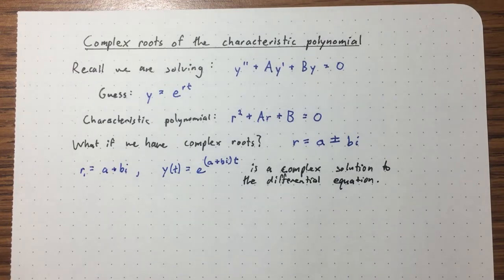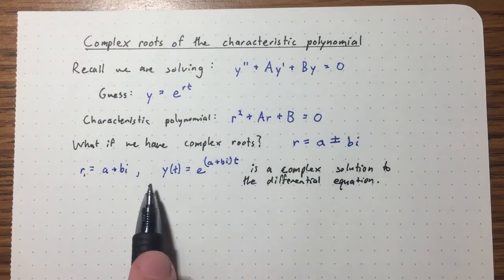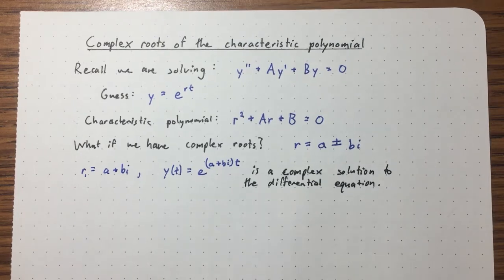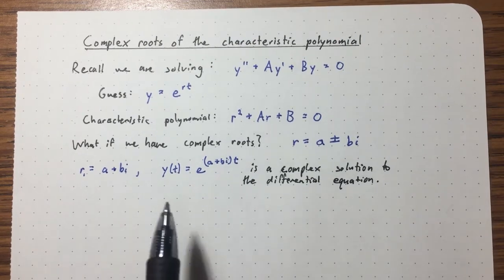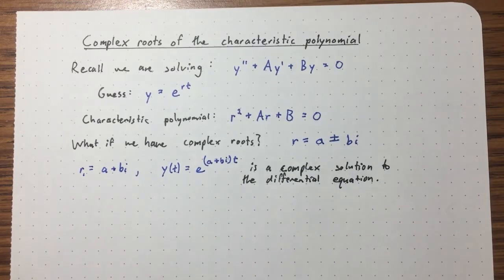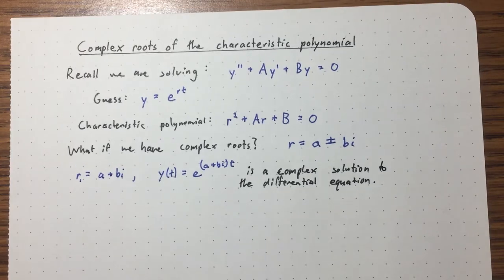That's good, but often in applications we don't want complex solutions — we actually want real solutions. For example, y(t) could describe the position of a mass attached to a spring. A complex function isn't going to help us; we want to know the actual position in meters. So the question is: how do we turn this into a real solution?